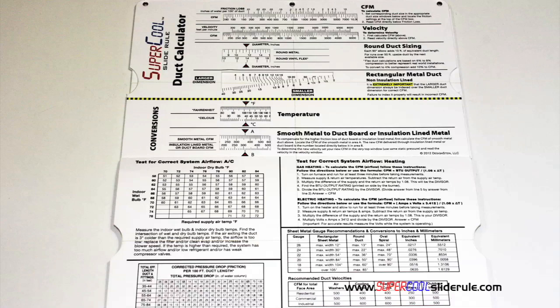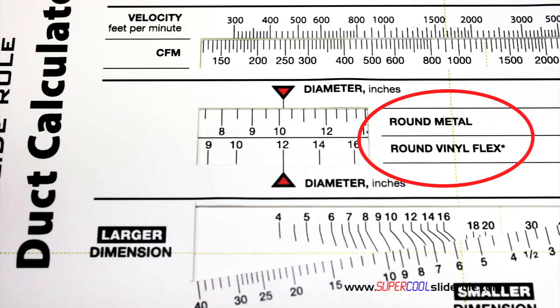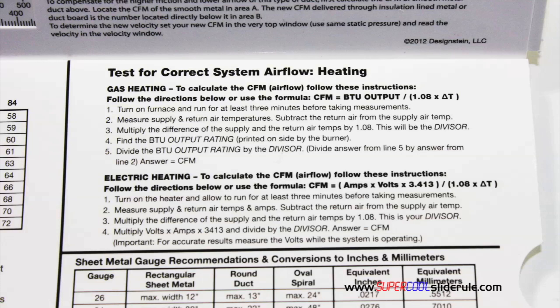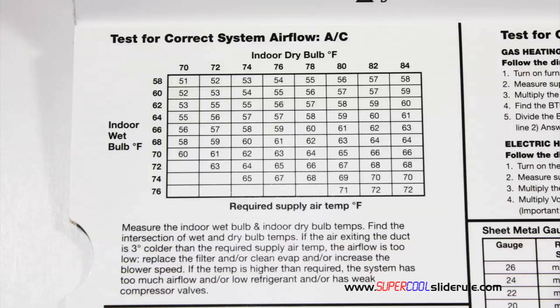Inside is packed with even more information. It performs sizing of both metal and flexible duct. It has the only direct reading conversion from smooth metal to insulated liner metal we've ever seen. The majority of technicians have never been taught that if the insulation is on the inside of the ductwork, you cannot size it with a regular duct calculator. It has step-by-step directions for determining airflow through a gas furnace, electric furnace, or an air conditioning unit.